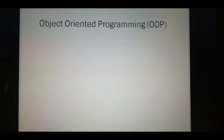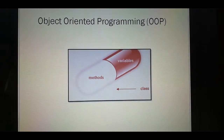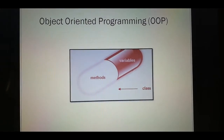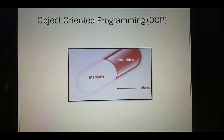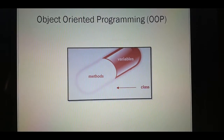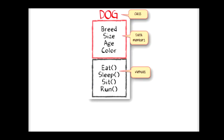After using POP, there comes the concept of OOP — object-oriented programming. Here, there is a single unit having the variables and the related methods. We can explain this in a better way with a diagram.